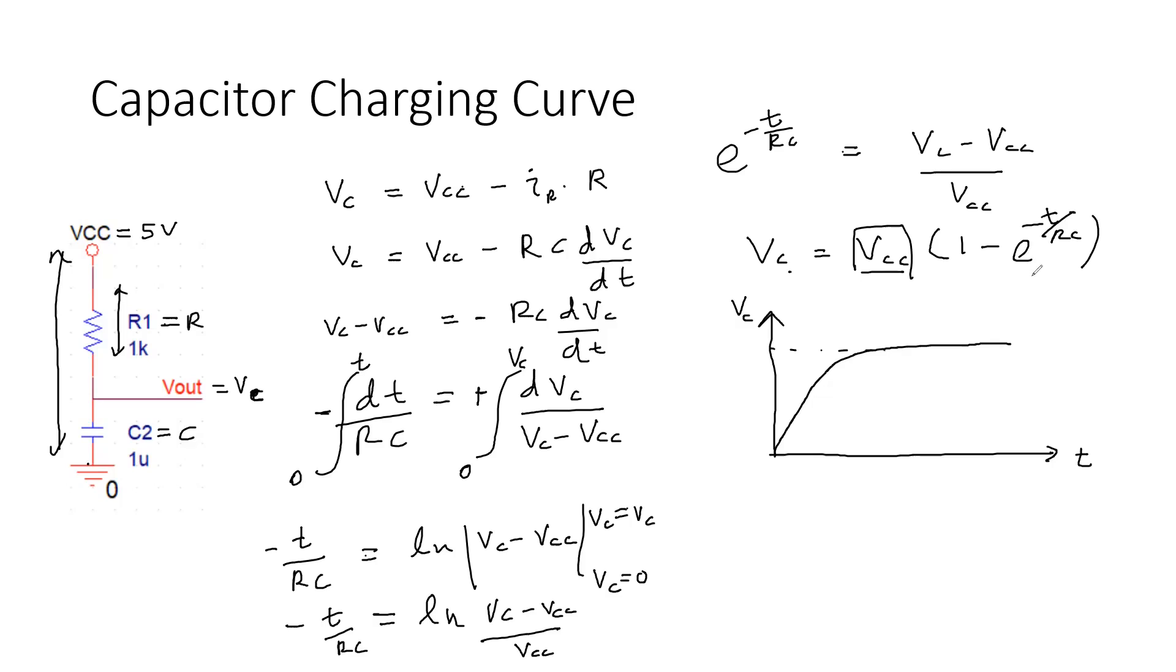We can do a bit more math. We know the term time constant. When T equals RC, you can see this term becomes e to the power minus 1. When you reach that RC time period, this VC voltage has dropped to two-thirds of its original voltage VC max. That's what we call the time constant.